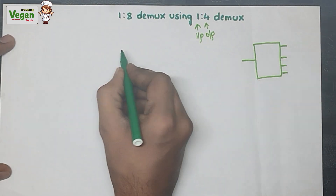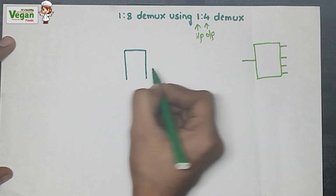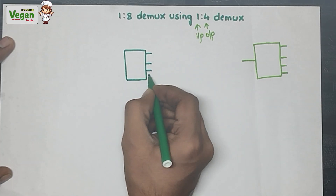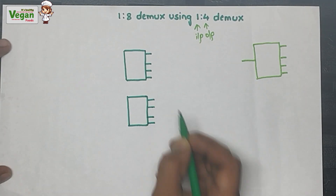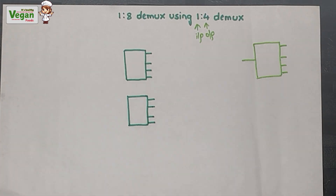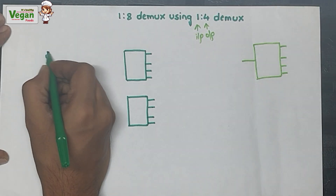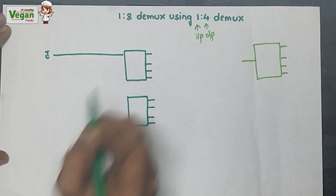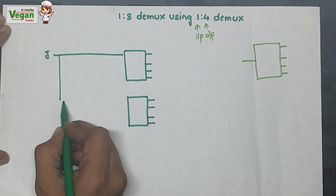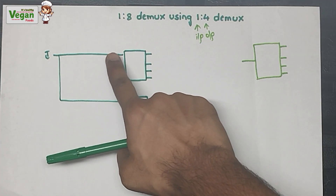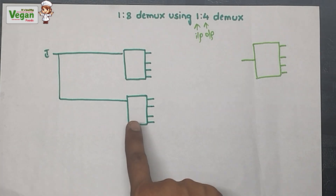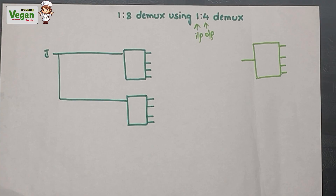Consider two 1-to-4 demux units — each has four outputs, giving us eight outputs in total. Now we must provide a single input. I will call it I. This same input I will act as the input to both 1-to-4 demux units, since each demux accepts only one input.